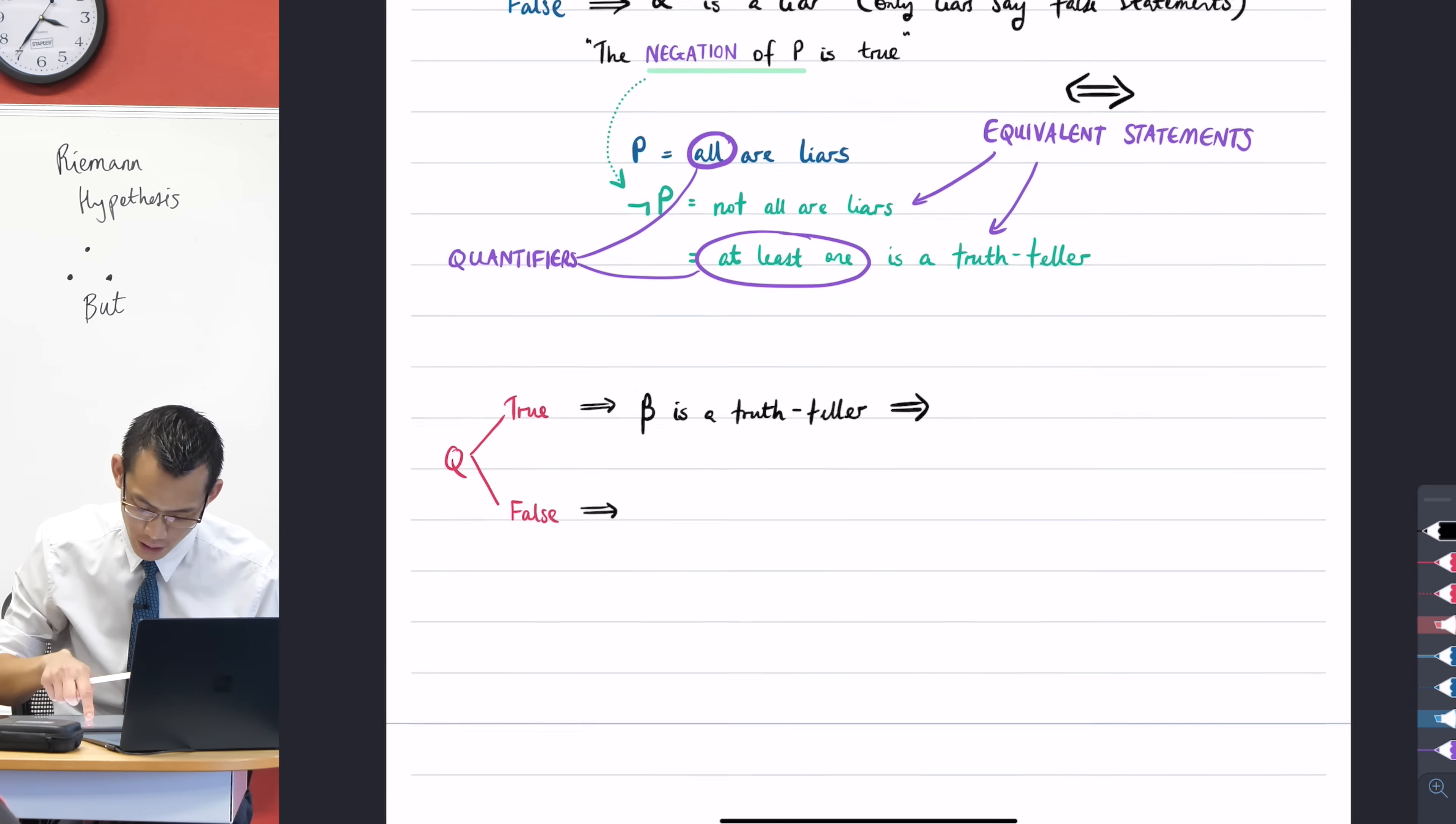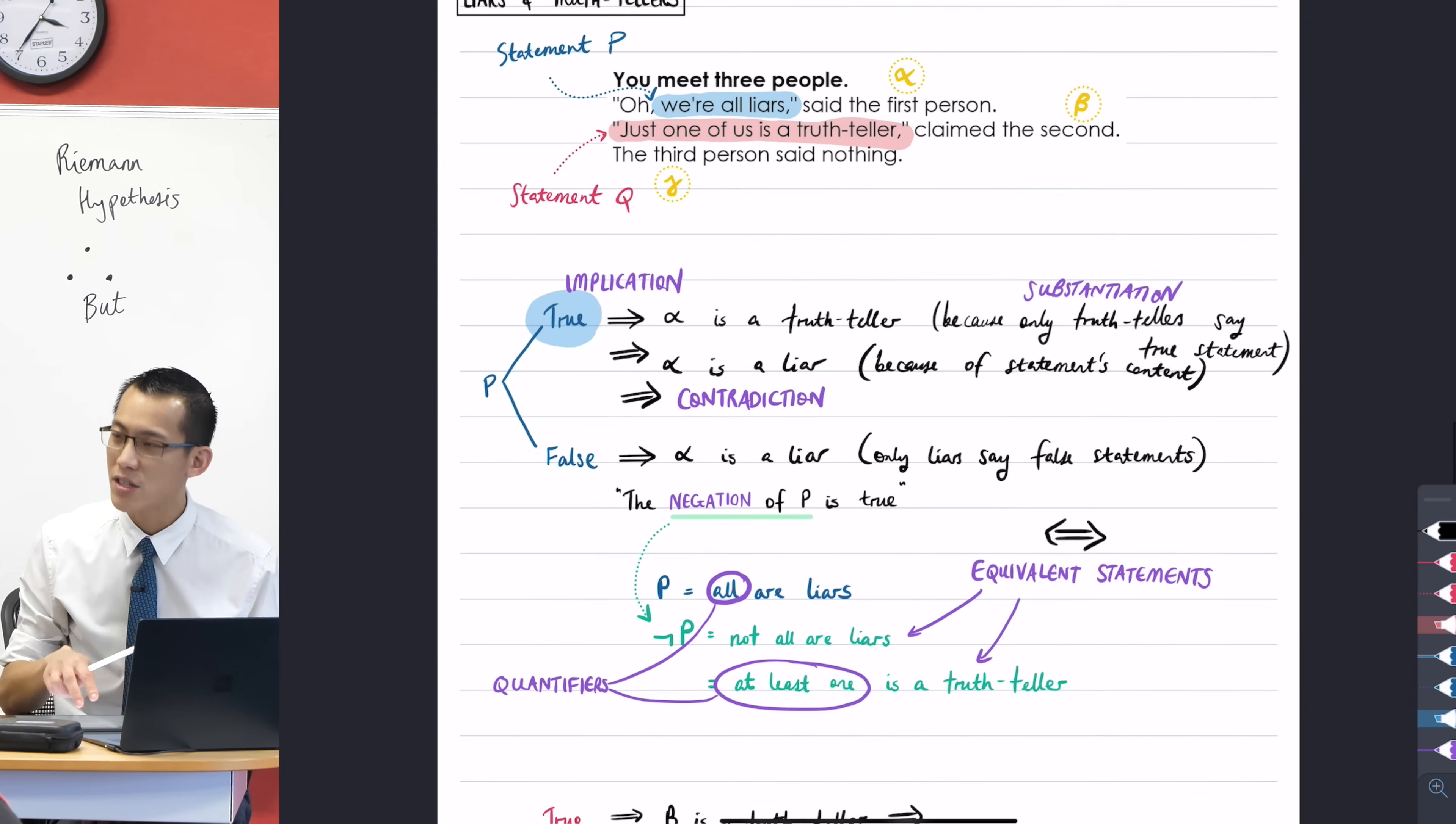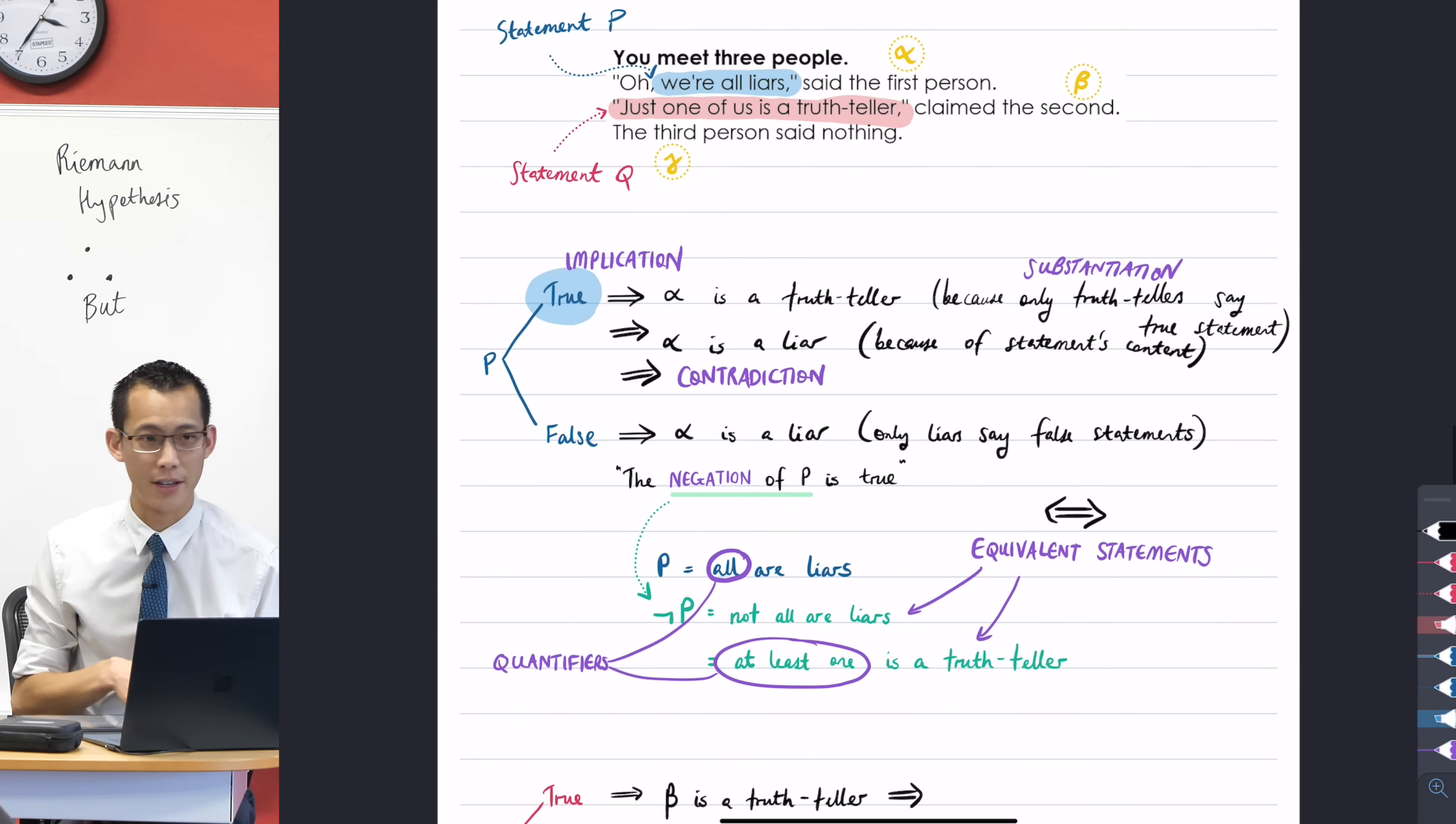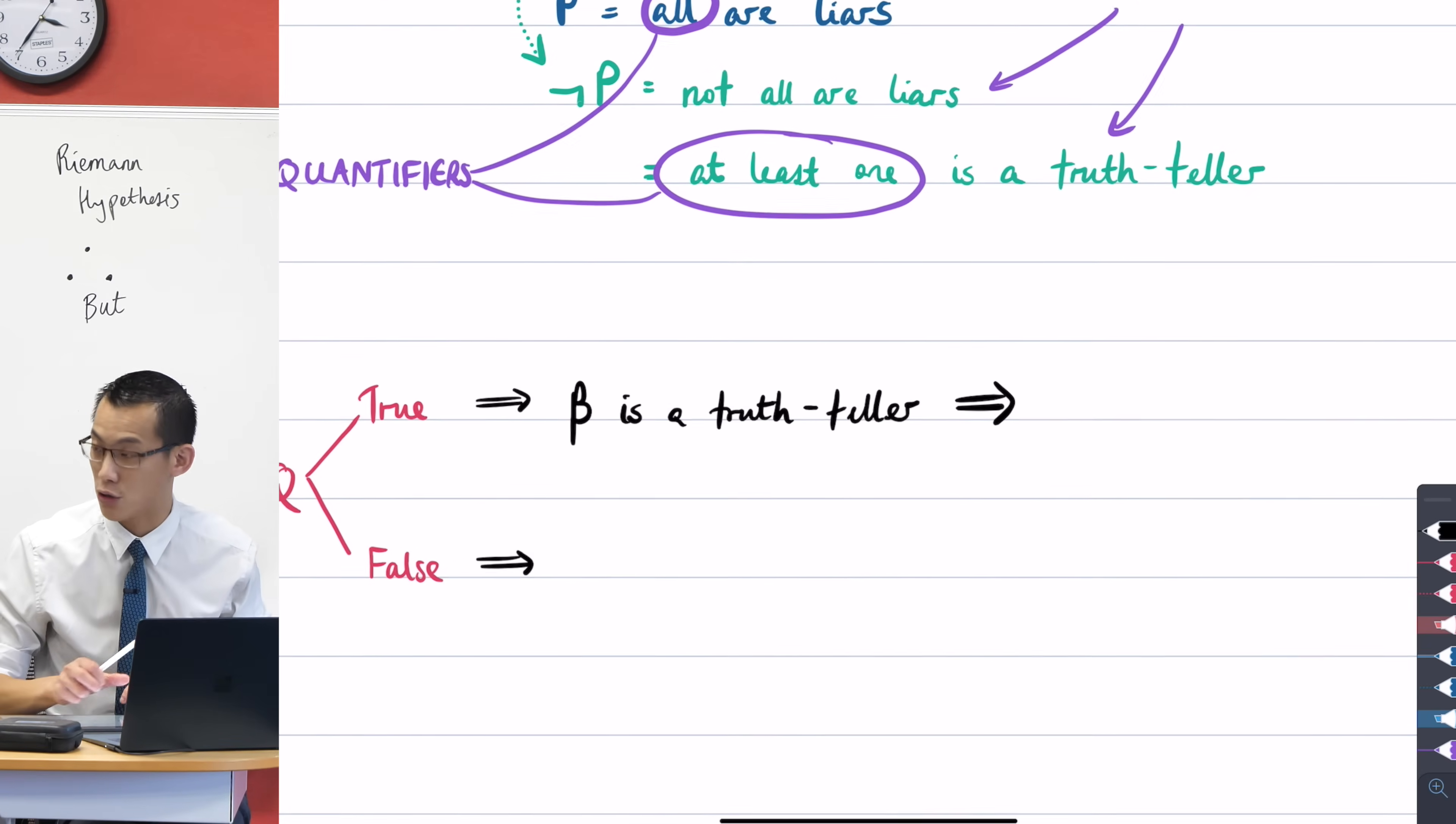But that has an implication. Have a think about this carefully with me. What is the content? What is the content of beta's statement? He says, just one of us is a truth-teller. So if he is or she is a truth-teller, then what can we conclude in addition to the fact that they're a truth-teller?